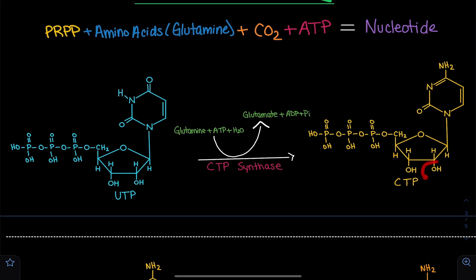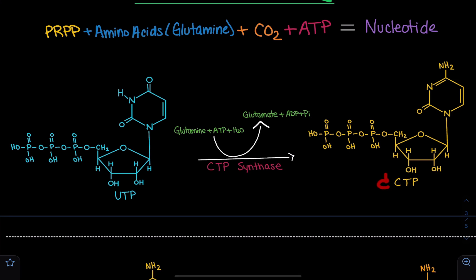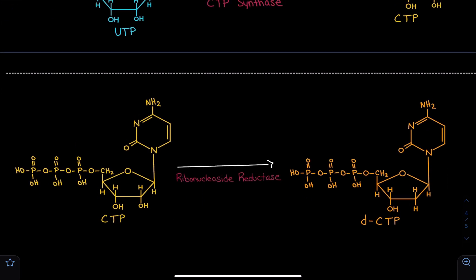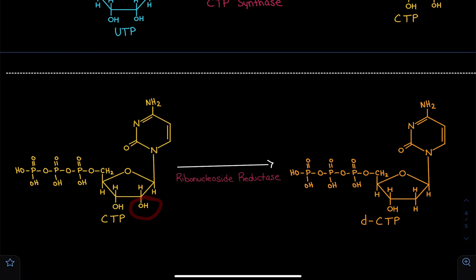So we have to get rid of this hydroxyl in order to get a deoxyribose sugar, and then we'll end up with DCTP, and DCTP can be used in DNA. We're going to utilize an enzyme called ribonucleoside reductase. We're going to do a reduction reaction where we lose this hydroxyl group and are left with a hydrogen. So we go from CTP to DCTP — CTP can be used in RNA, and DCTP will be used in DNA.